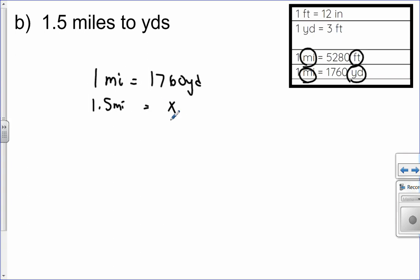So again, I am going to cross multiply and divide. So 1.5 multiplied by 1760 divided by one will give me my x value. So then I just have to simply put this into my calculator and I get 2640 equals x, which means that 1.5 miles is the same as 2640 yards.